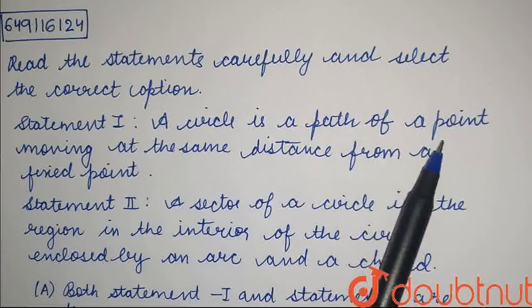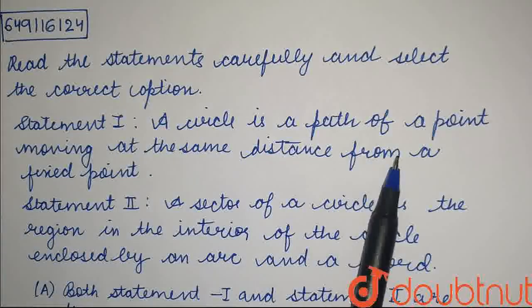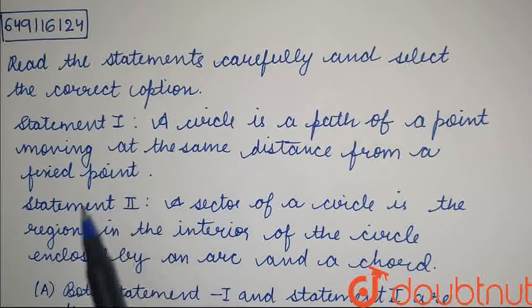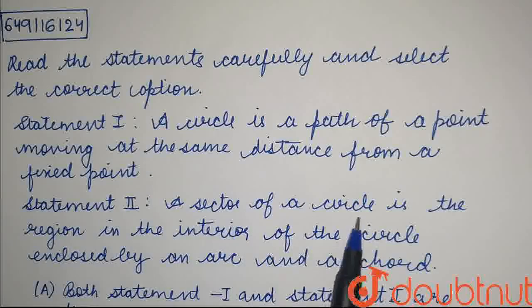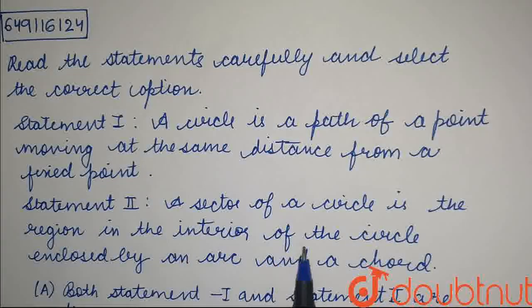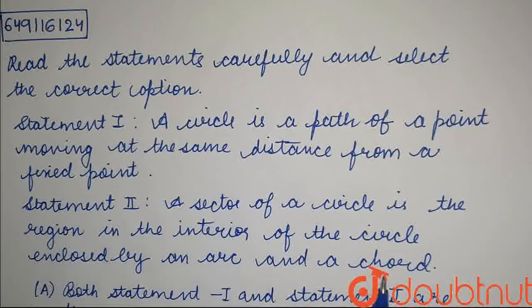Statement one is: a circle is a path of a point moving at the same distance from a fixed point. And statement two is: a sector of a circle is the region in the interior of the circle enclosed by an arc and a chord.